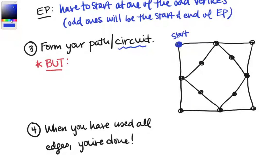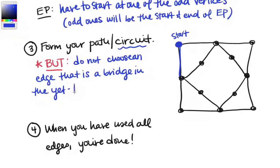And then from that start, we're just going to start picking edges. But we want to be careful. There's one caveat here, which is do not choose an edge that is a bridge in the yet to be traveled part of the graph.